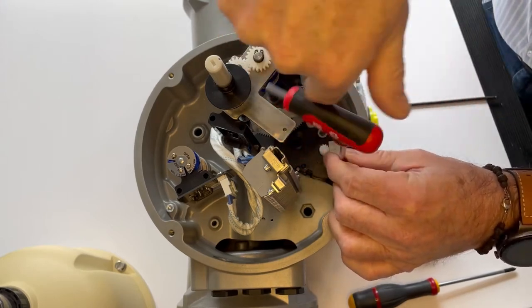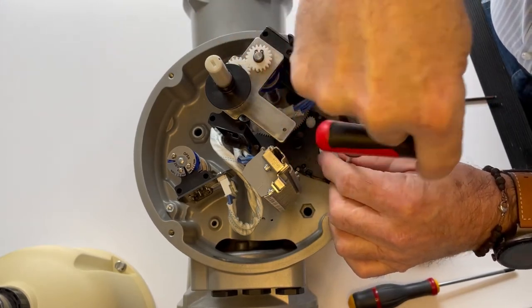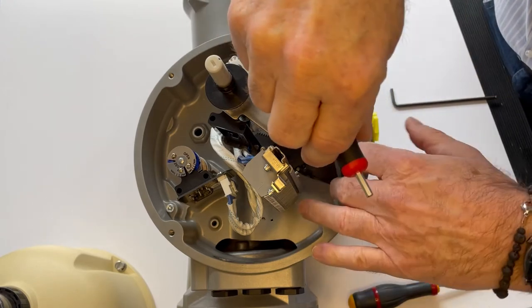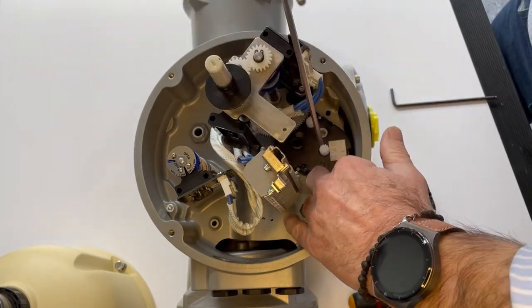First, remove the first screw with a hex key. Be very careful not to drop the screw inside the actuator as it might damage the motor.